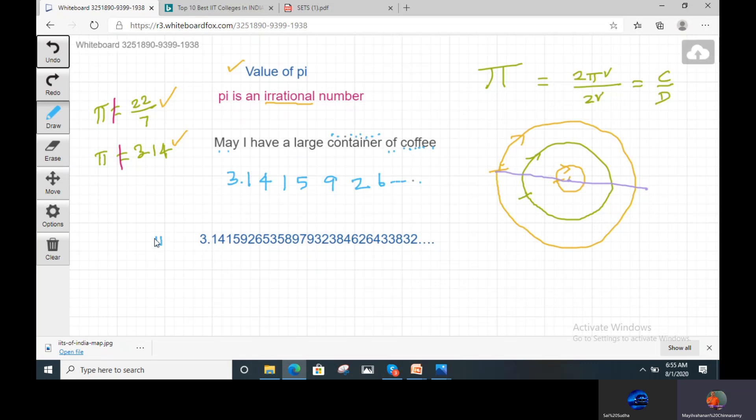This is the pi value. How many digits are there? 1, 2, 3, 4, 5, 6, 7, 8, 9, 10, 11, 12, 13, 14, 15, 16, 17, 18, 19, 20, 21, 22, 23, 24, 25, 26, 27, 28 digits. It is 28 digits approximation.